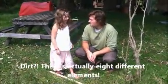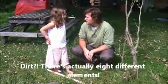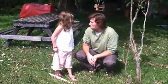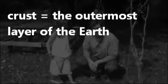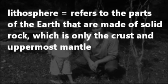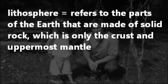Dirt? It actually turns into elements. The crust is the outermost layer of the Earth. The lithosphere refers to all parts of the Earth that are made of solid rock, which is only the crust and uppermost mantle.